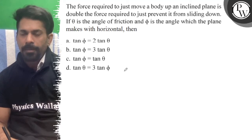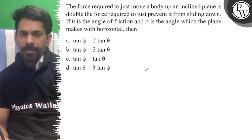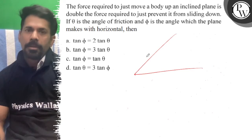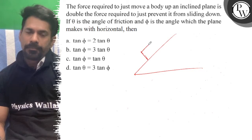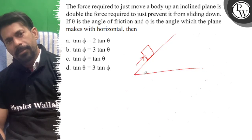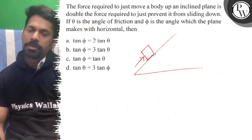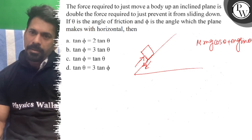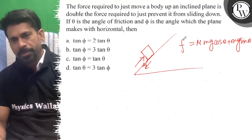The force required to just move up an inclined plane is double that the force required to just prevent the sliding down. If theta is the angle of friction and phi is the angle which the plane makes with the horizontal, then the force required to just move a body up on an inclined plane is mu mg cos theta plus mg sin theta.